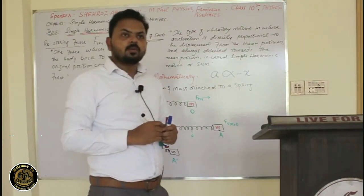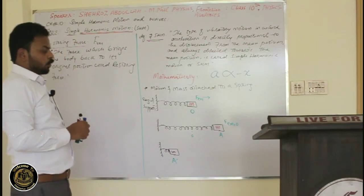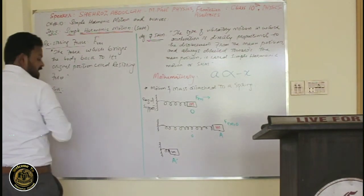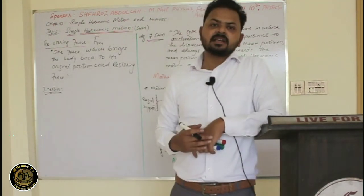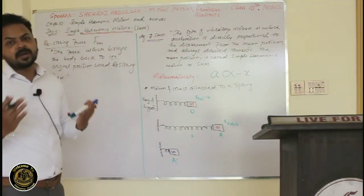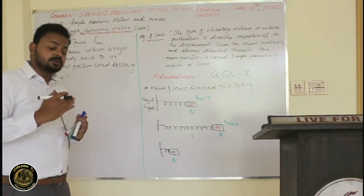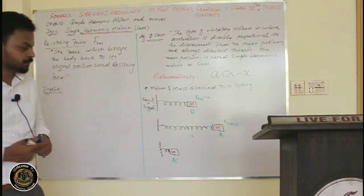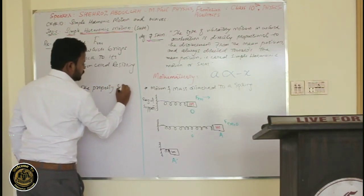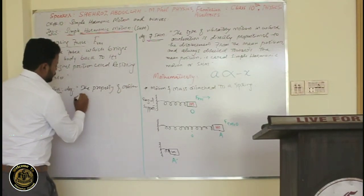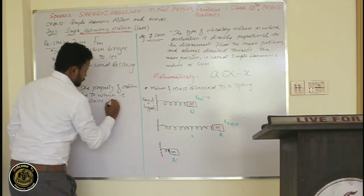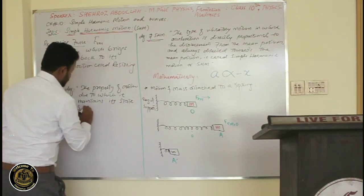The second important question: why does the body not stop at O? The reason is inertia. We already know that inertia is the property of matter due to which the body maintains its state of rest or uniform motion. So the property of matter due to which it maintains its state of rest or motion explains why the body overshoots O.